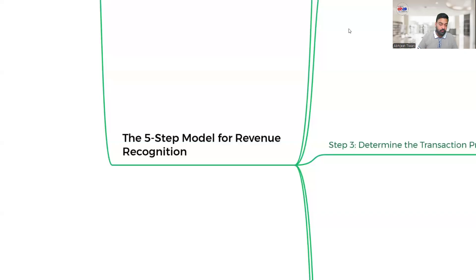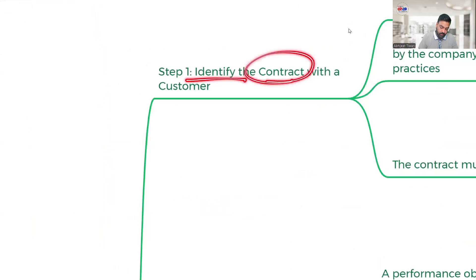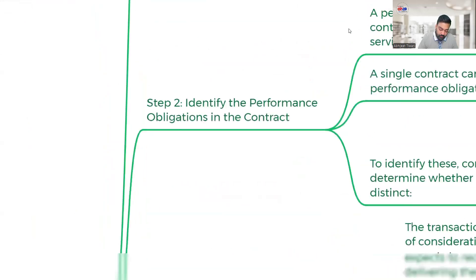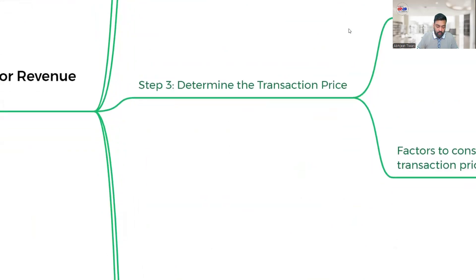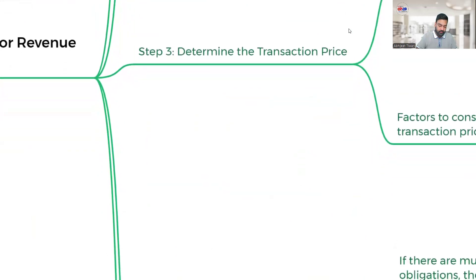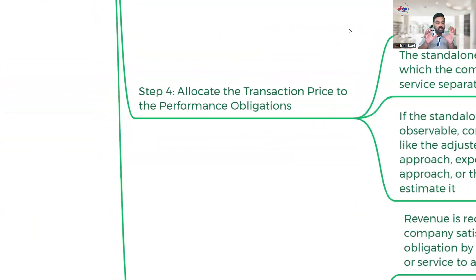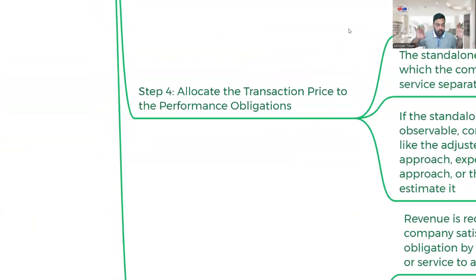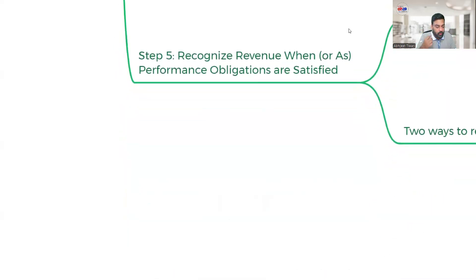Let's understand the five-step model we follow while recognizing revenue. Step one: identify the contract with the customer. Step two: identify the performance obligations. Step three: determine the transaction price you are going to charge the customer. Step four: allocate this transaction price to the performance obligations. Step five: as and when you complete each performance obligation, you recognize the revenue.